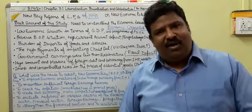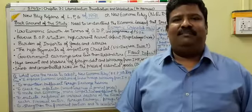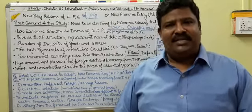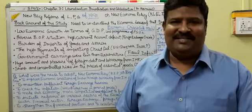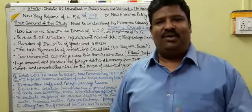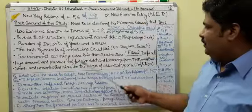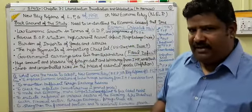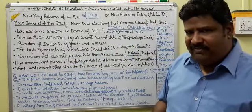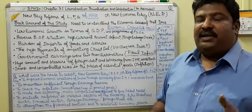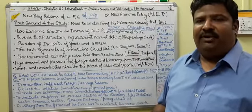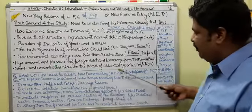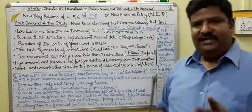This increased money supply in economic circulation increases the purchasing power of the people. When people have money and purchasing power, they are ready to purchase goods and services even at high prices. That is the main cause of inflation. So fiscal deficit, then deficit financing to cover that deficit, and circulation of more currency is one of the reasons for inflation.